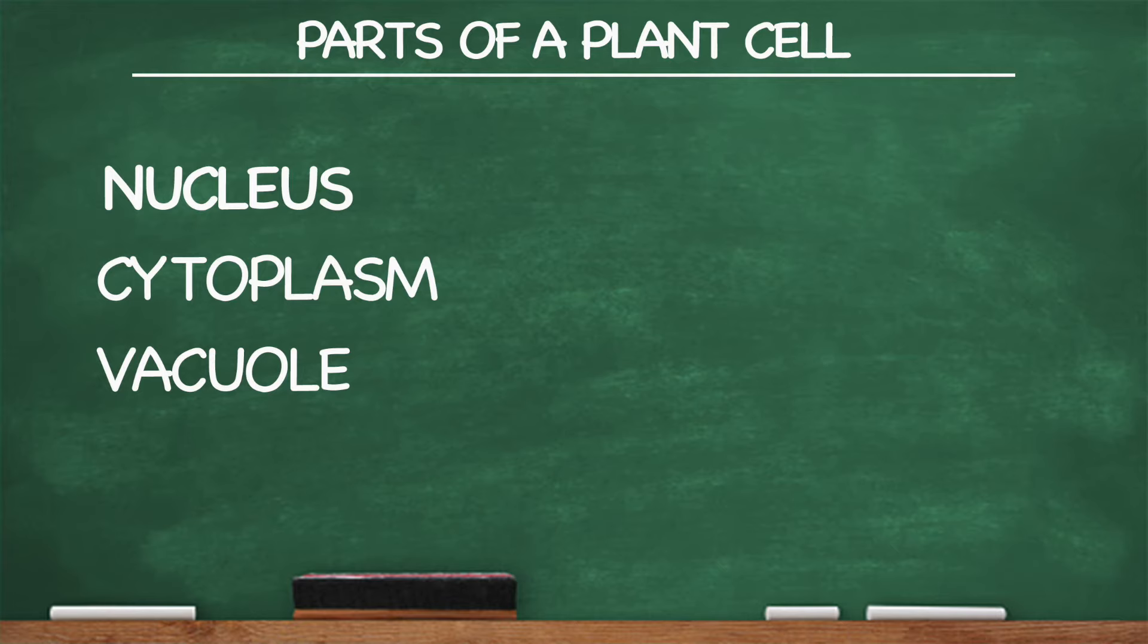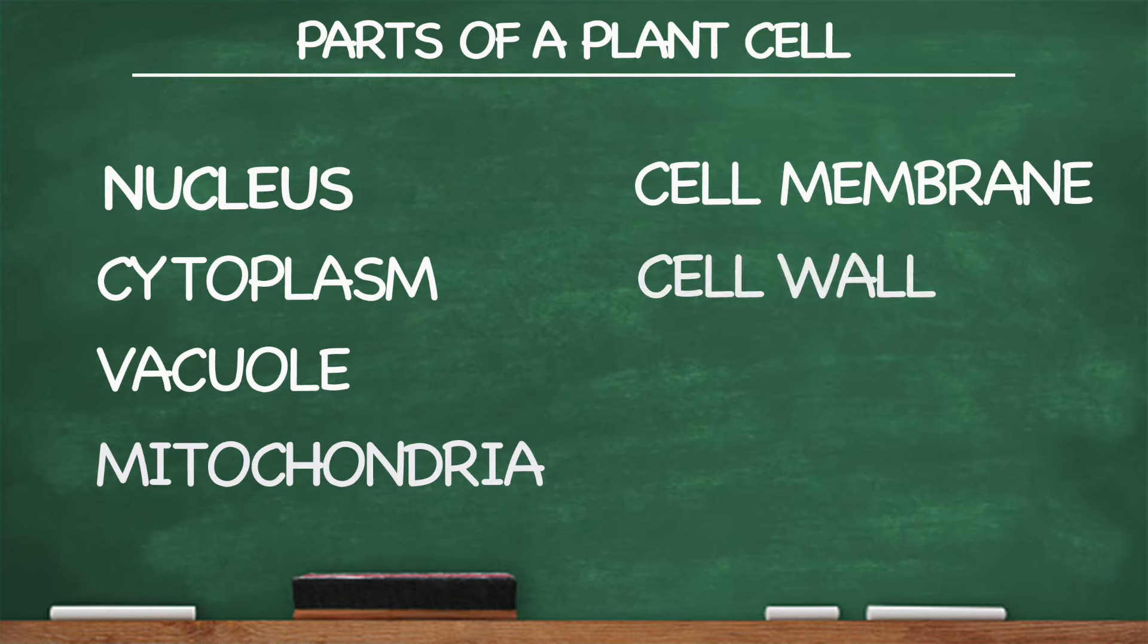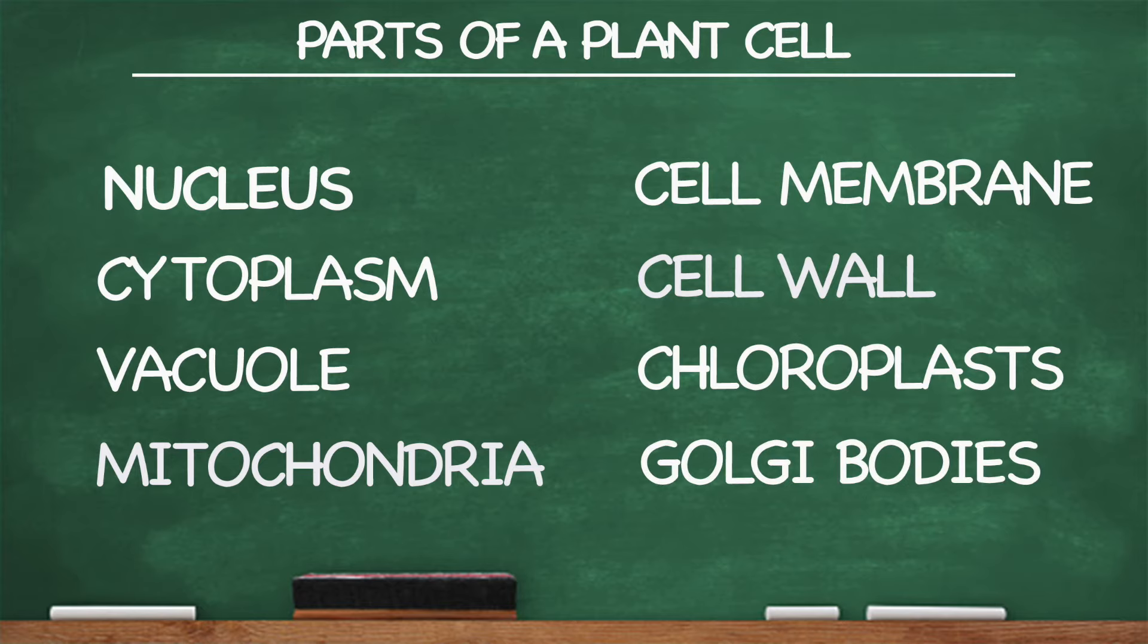Nucleus, cytoplasm, vacuole, mitochondria, cell membrane, cell wall, chloroplasts, golgi bodies. These are the parts of a plant cell.